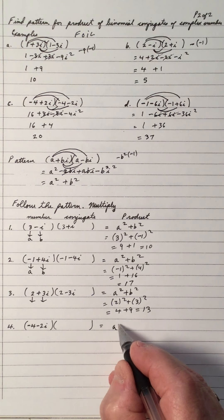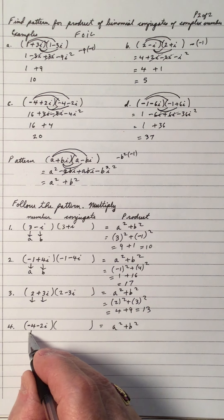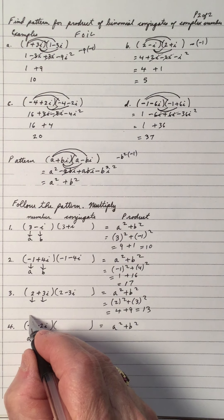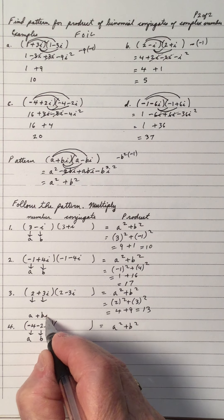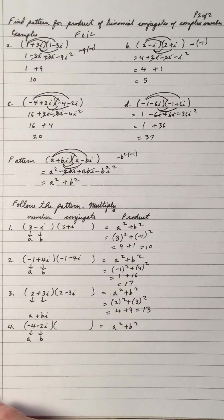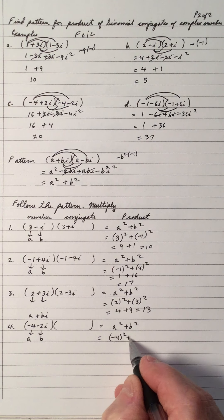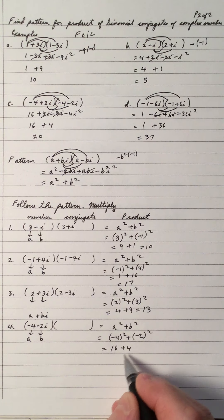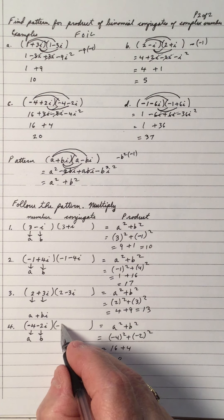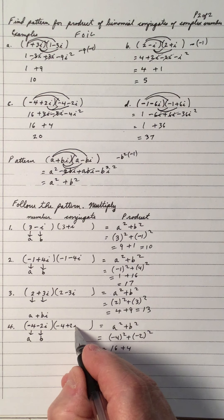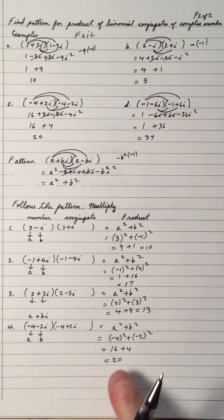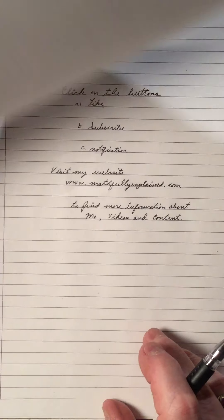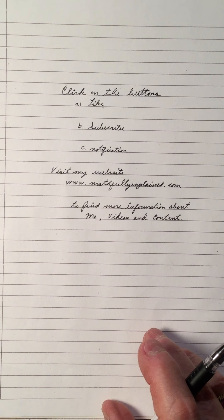The quick way is a squared plus b squared. For a plus bi form where a is negative 4 and b is negative 2: negative 4 squared plus negative 2 squared gives 16 plus 4, which is 20. If you want, you can verify by multiplying with the conjugate, negative 4 plus 2i, by FOIL and you'll get the same result. That is the pattern for multiplying binomial complex conjugates.